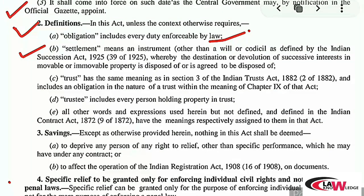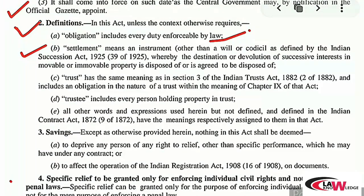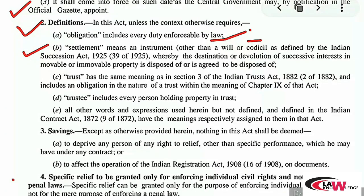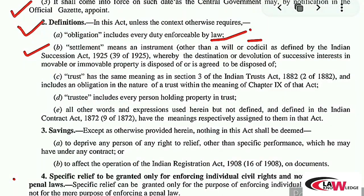Two things are excluded from settlement: will and codicil. A will is a document — an instrument — through which you make a testamentary disposition, specifying how your property will be divided after your death. A codicil is an additional instrument or document that is attached to the will, which contains certain additions or amendments to be made to the will. For example, if a person has already made a will and later wants to add amendments, they attach another document — that particular document is called a codicil.